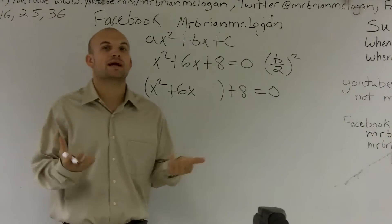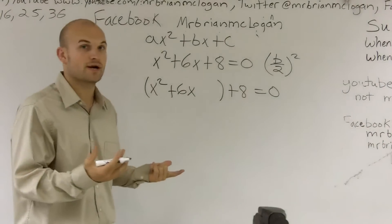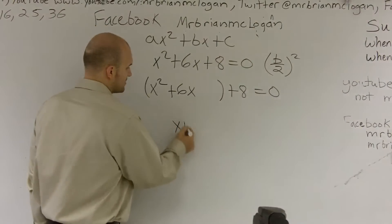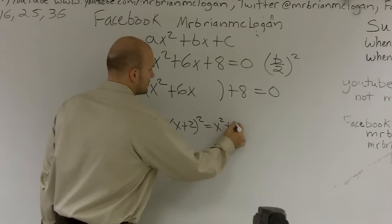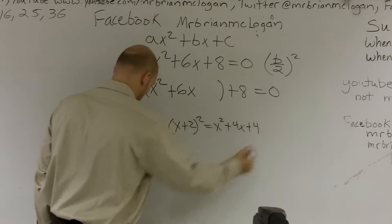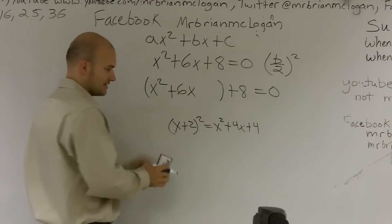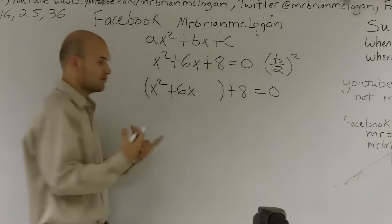Now what I'm going to do is I'm going to create a perfect square. And remember, a perfect square would be something like x plus 2 squared, where it gives you x squared plus 4x plus 4. That's a perfect square. We like these. So I need to create one.